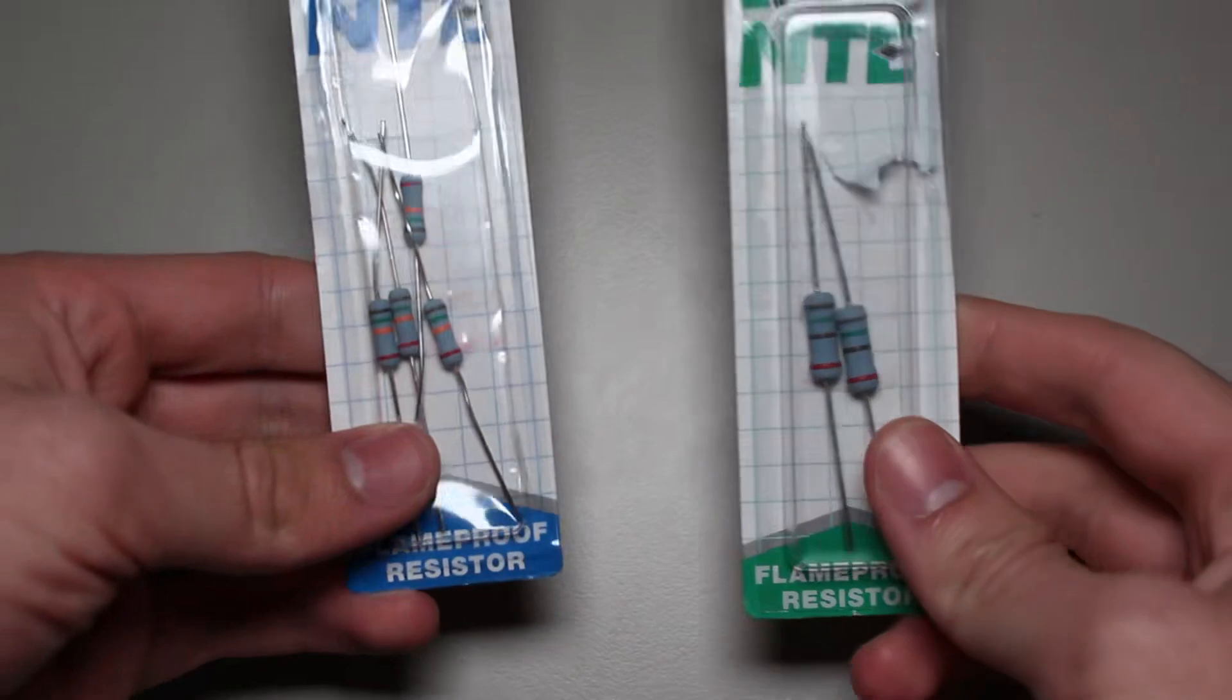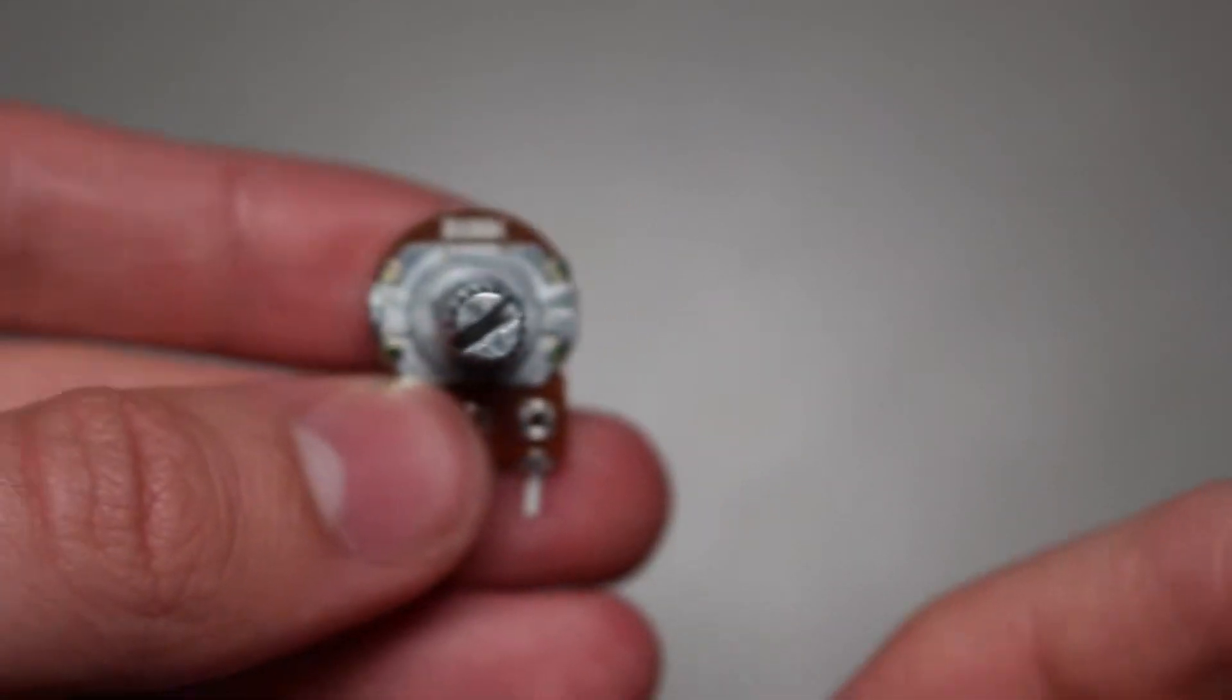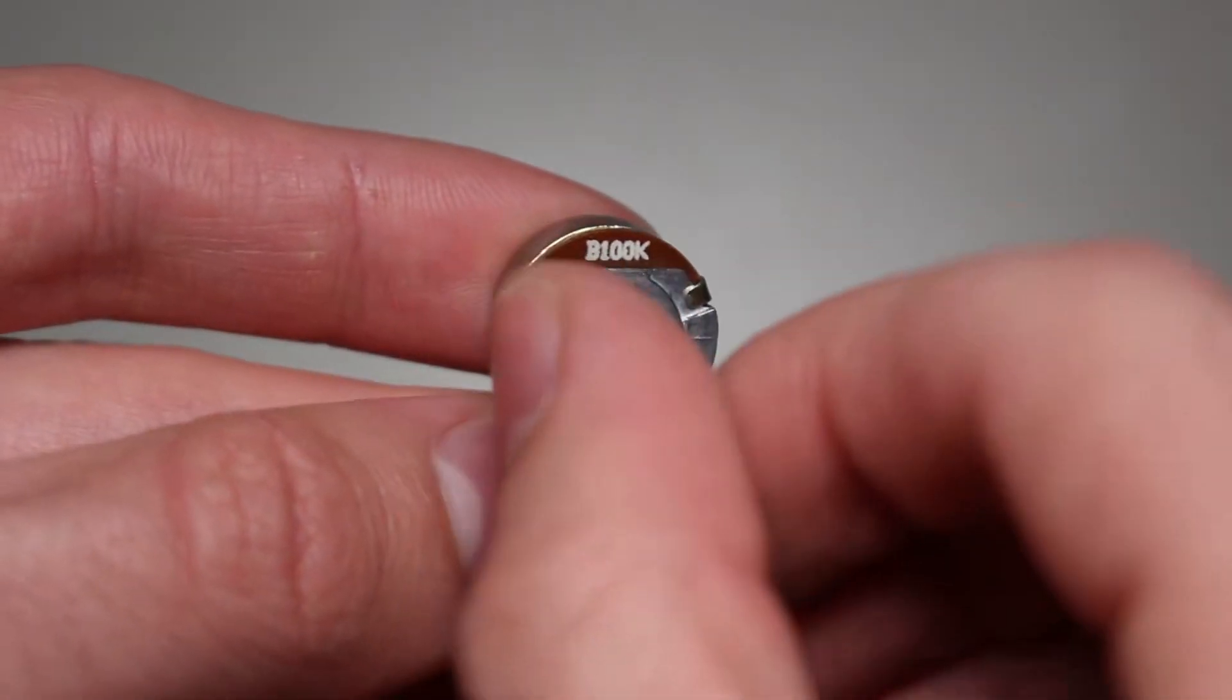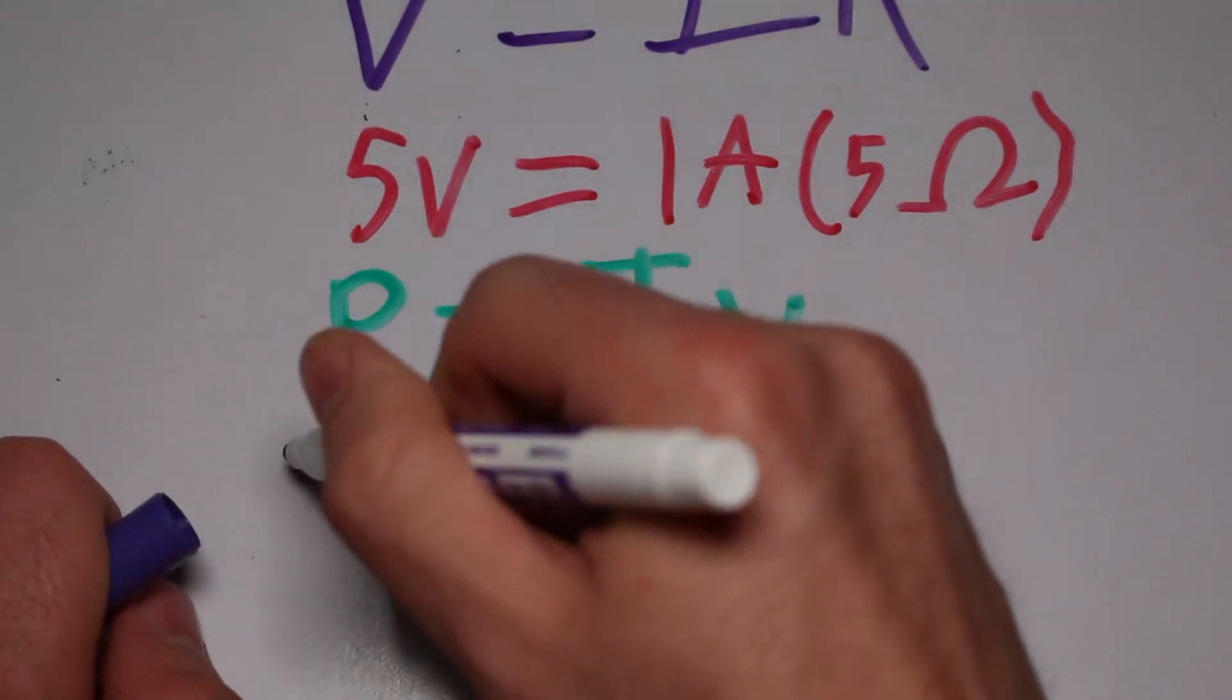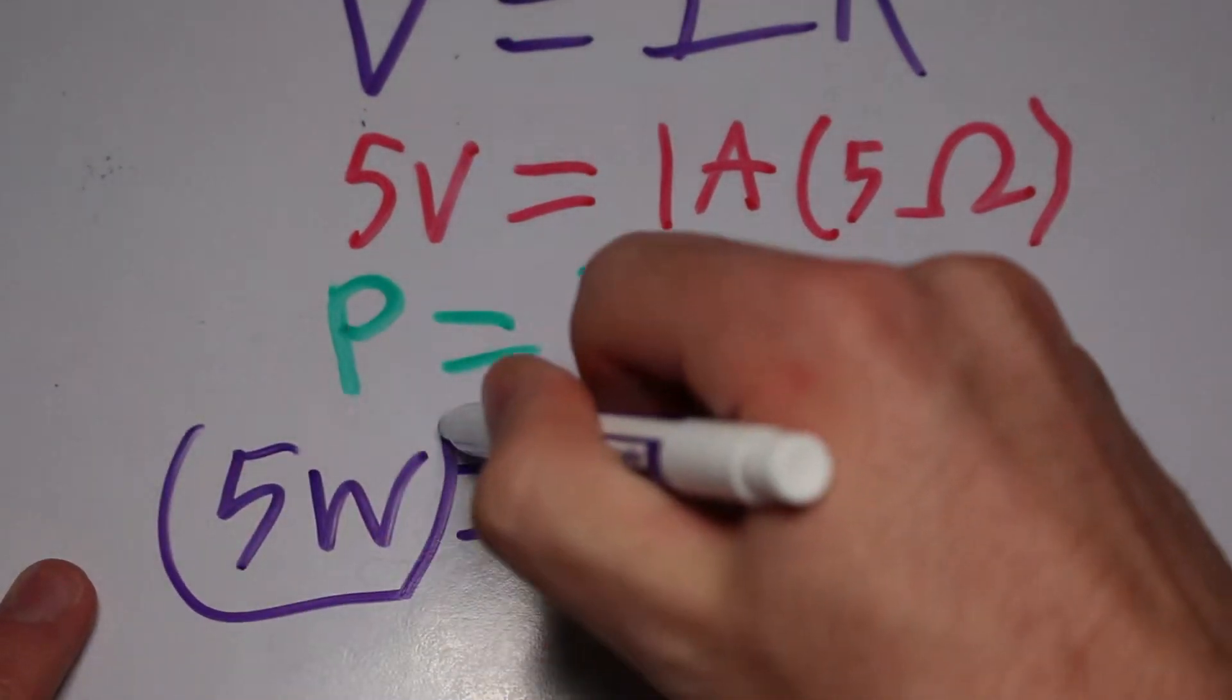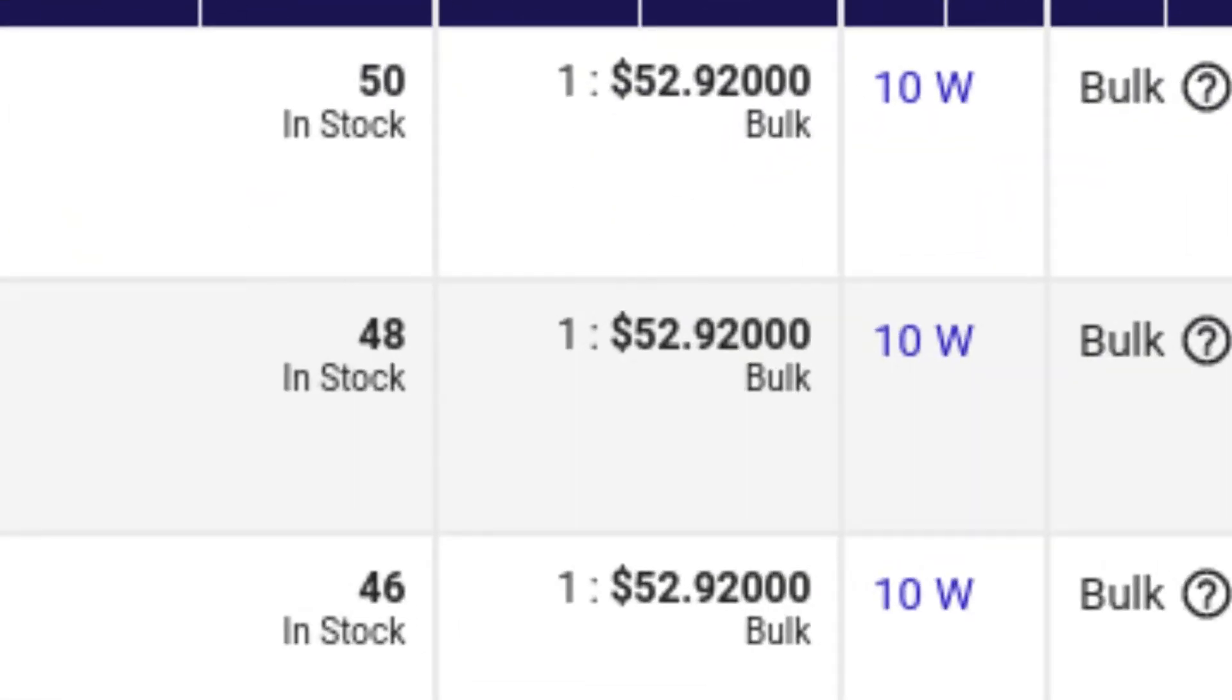But how can we create a variable resistance? The first thing that comes to mind are potentiometers. And yes, they do technically work. The only problem with them is that they oftentimes cannot handle the load that we need to test. For example, if we ran the supply at 5 volts and set the potentiometer to 5 ohms, we would get 1 amp with a power loss of 5 watts. This is much higher than what many potentiometers can handle, and it gets even worse with higher voltages and currents. So you could try to find a power potentiometer, but there are better options available for setting our load.